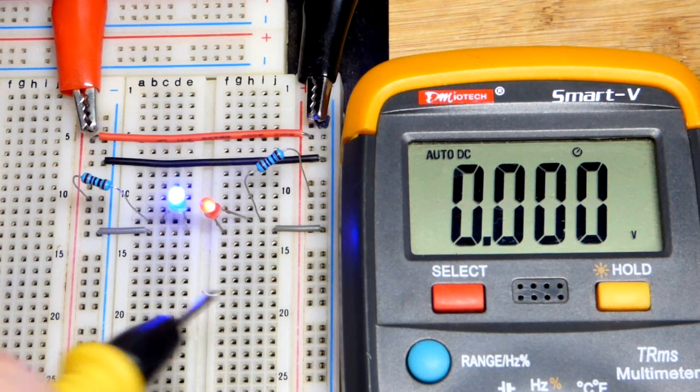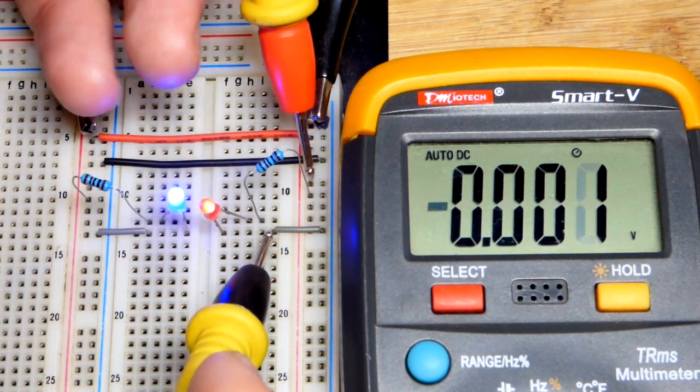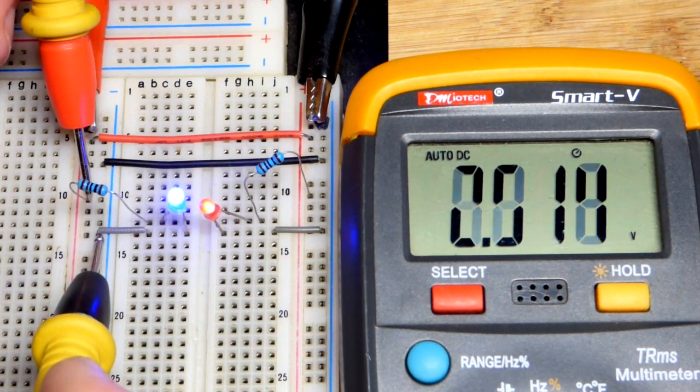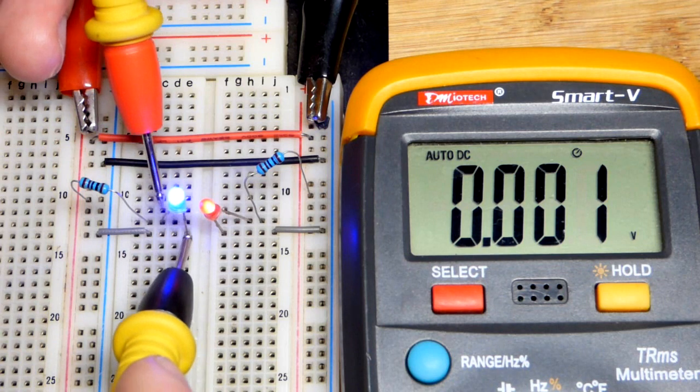And now we'll take our measurement. So the power supply voltage is set to 5 volts. We'll see that both of these circuits have 5 volts across them. They're both to rails with 5 volts.